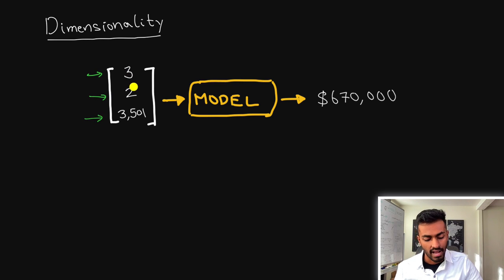Each of these features are added to one dimension, and so increasing the dimensionality will allow us to put more information into the model that it can use to better infer this final prediction. Dimensionality can be pretty useful.